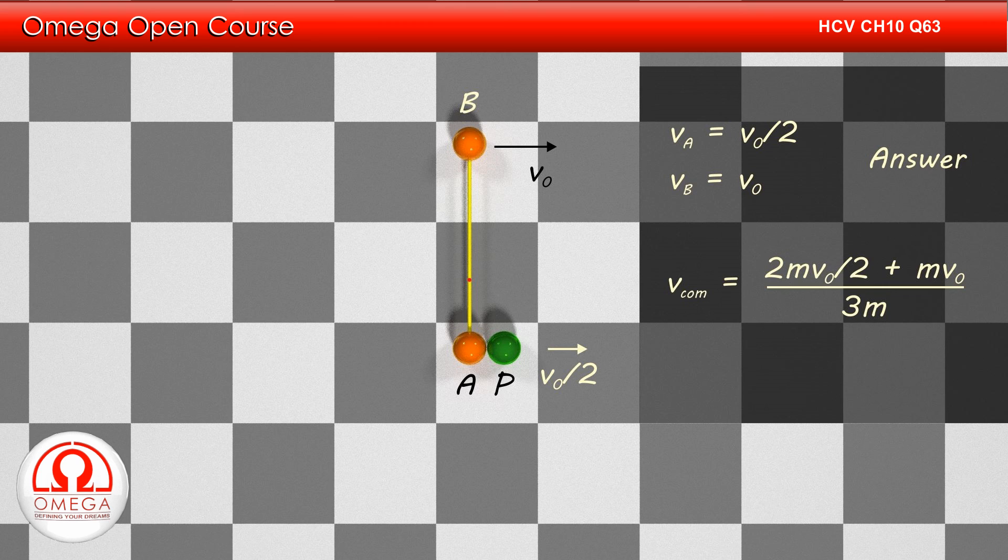The velocity of the center of mass is given by mass of AP system into its velocity plus mass of B into its velocity divided by mass of the entire system. Putting the values, we get 2m into V0 by 2 plus m into V0 divided by 3m or 2V0 by 3. This is answer to part B of the question.